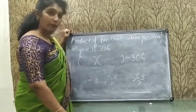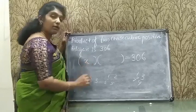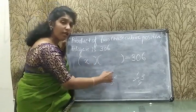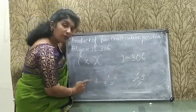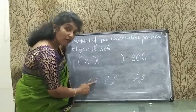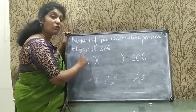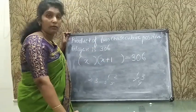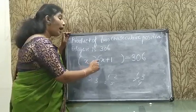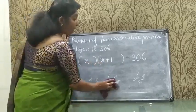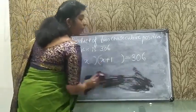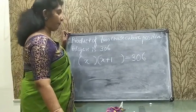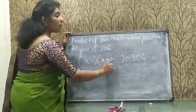In general, if I write one number as x, the next consecutive number is x + 1, because you add 1 to the previous number. So x and x + 1 are consecutive numbers. Their product equals 306: x(x + 1) = 306.